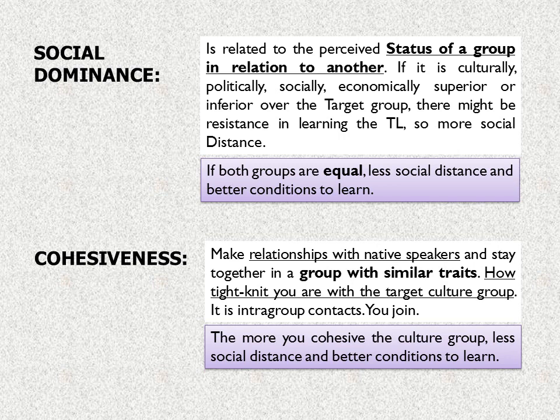The fourth social factor is social dominance. It is related to the perceived status of the group in relation to another — whether culturally, politically, socially, or economically superior or inferior over the target language group. If there is an imbalance, there might be resistance in learning the target language, meaning more social distance. But if both groups are equal in status, there is less social distance and better conditions to learn.